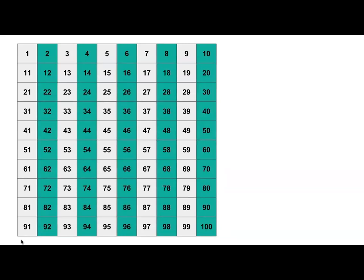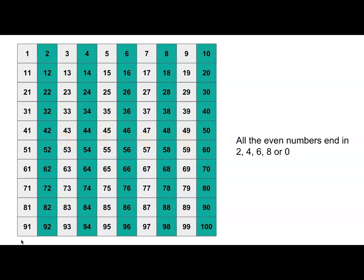Now take a look at the ones digit. What do you notice about the ones digit for all the even numbers? Yes, that's right. All the even numbers end in two, four, six, eight or zero. Now what about the odd numbers? What do you notice about the ones digit of the odd numbers? They all end in one, three, five, seven or nine.